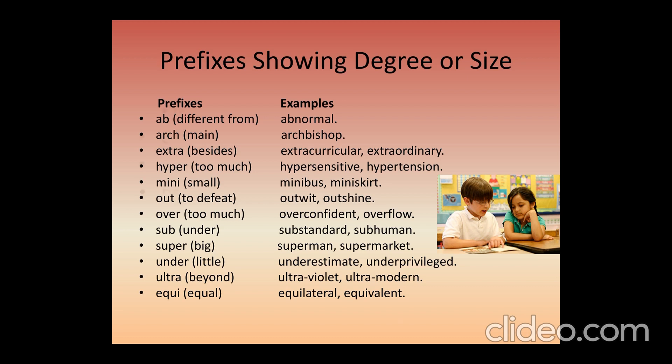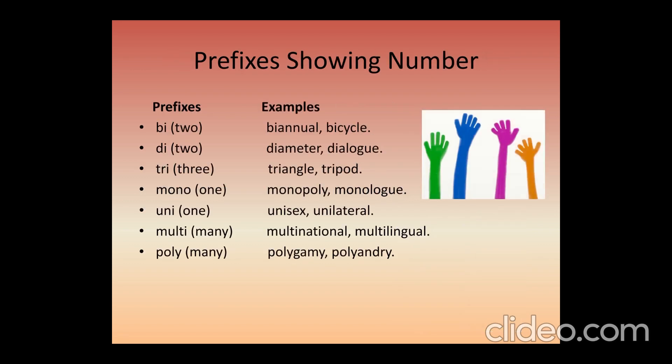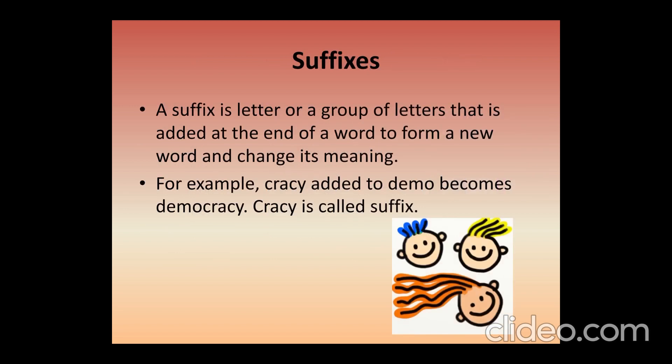'Equi-' always means equivalent — equal. Then we have prefixes used for making verbs: endanger, enable, empower, belittle. We also have prefixes showing numbers: 'bi-' means two — bi-annual, bi-cycle; 'tri-' means three; 'mono-' means one; 'uni-' means one; 'multi-' means many; 'poly-' means many. These are the words used as prefixes.